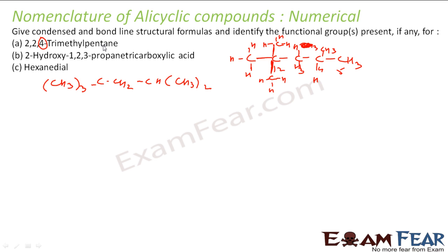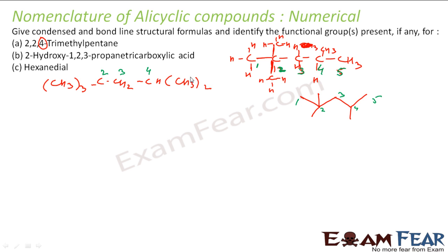Now let me draw the bond-line formula. It is pentane so let me draw 5 carbons — 1, 2, 3, 4, 5. At the second carbon I have 2 methyl groups, and at the fourth carbon I have 1 methyl. Numbering confirms: second carbon carries 3 methyl substituents in total, third carbon continues the chain, fourth and fifth complete it. This is my bond-line structure for 2,2,4-trimethylpentane.